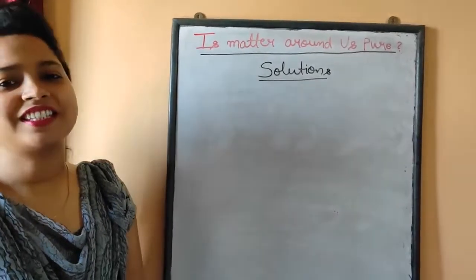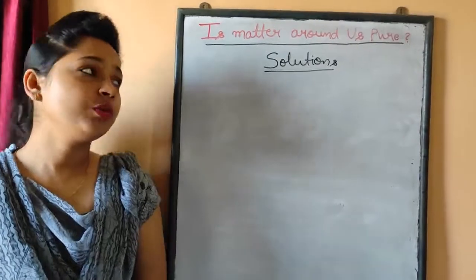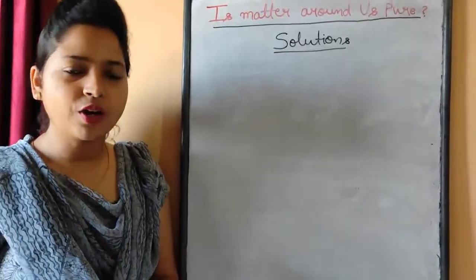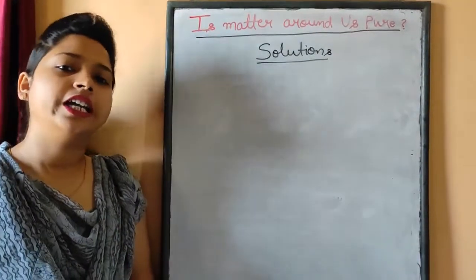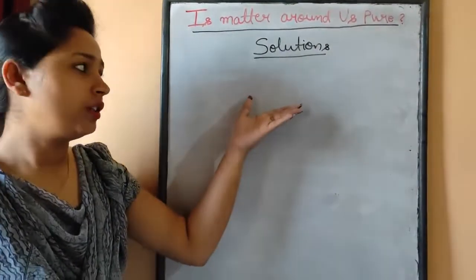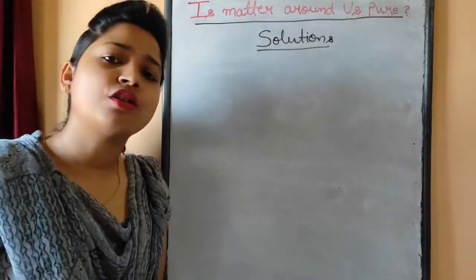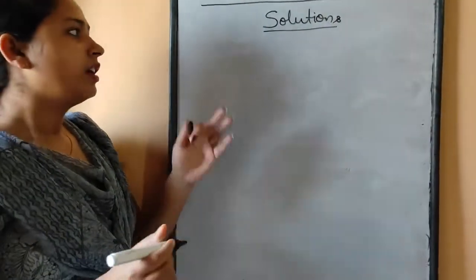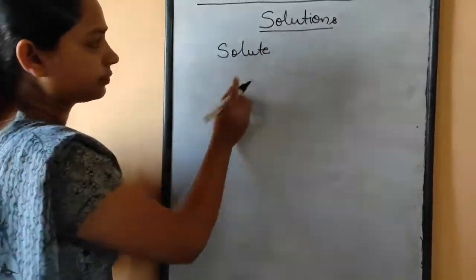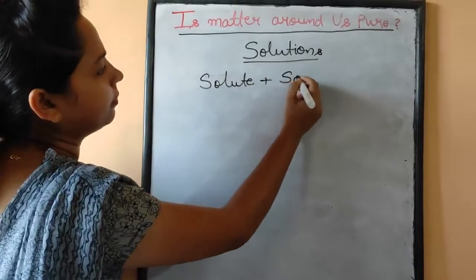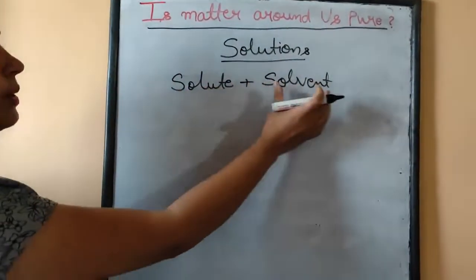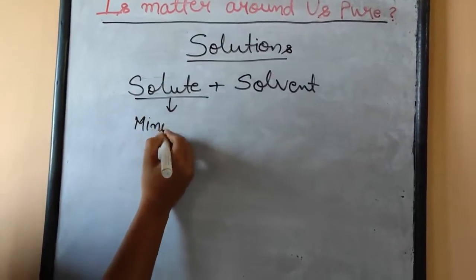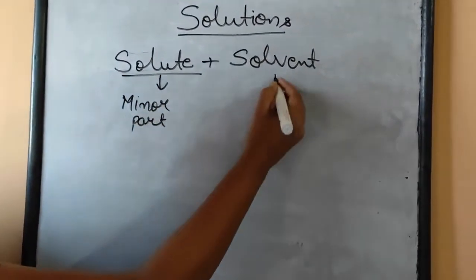Hello everyone, let's start today the next topic of chapter 2, that is 'Is Matter Around Us Pure?' In the last lecture we discussed elements, compounds, mixtures, homogeneous and heterogeneous mixtures. Today we discuss solution. You can see on the board the term 'solution' is written. Solution is a kind of mixture, made up of two things: solute plus solvent.